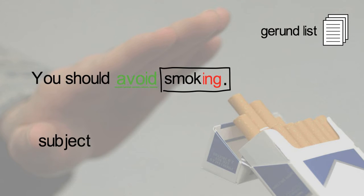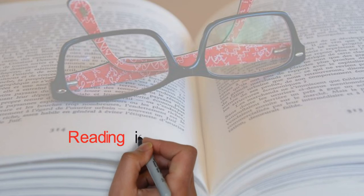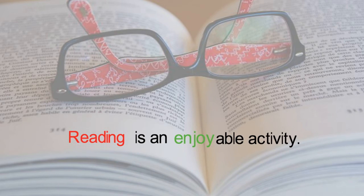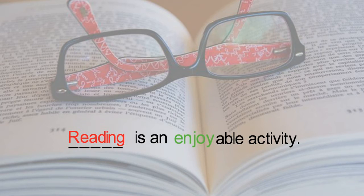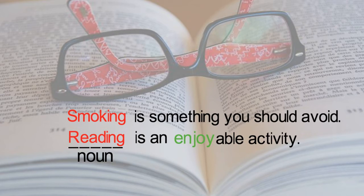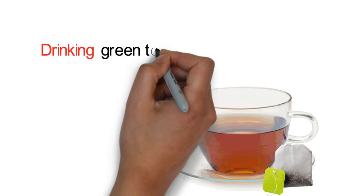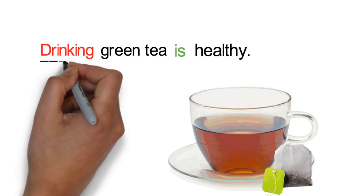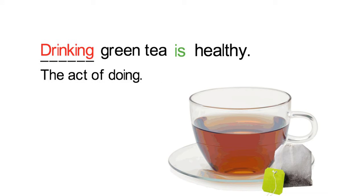Gerunds can also be used as the subject of a sentence. Remember that a subject is what the sentence is about. For example, 'Smoking is something you should avoid' and 'Reading is an enjoyable activity.' Notice both subjects are gerunds ending in -ing. The words smoking and reading function as nouns too. For example, 'Drinking green tea is healthy' — drink is part of the subject, so it becomes drinking.